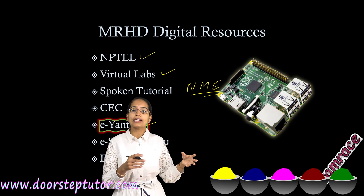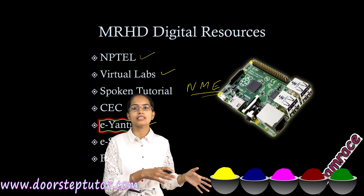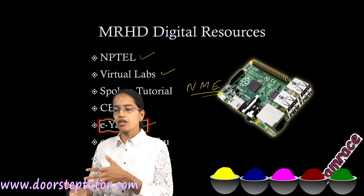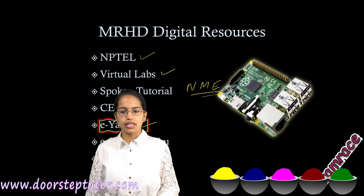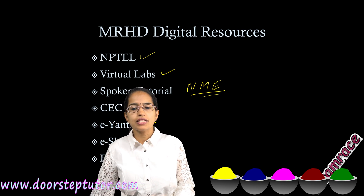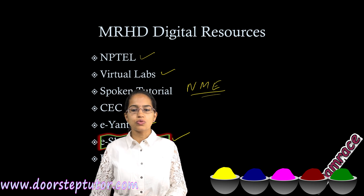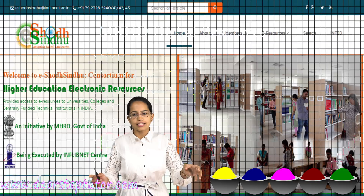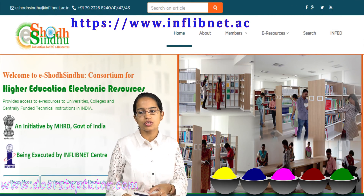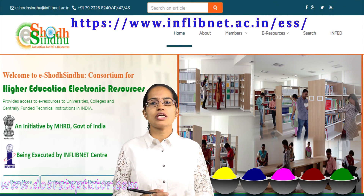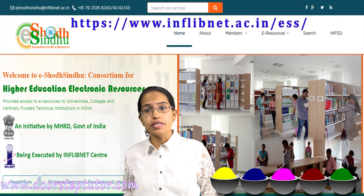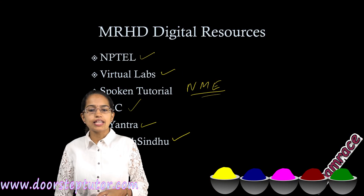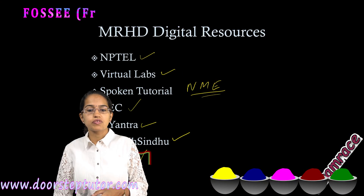The next is e-Yantra. e-Yantra is an initiative to incorporate robotics into learning or engineering education. Then e-ShodhSindhu is the portal where electronic resources — e-resources — are available to universities and colleges.